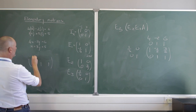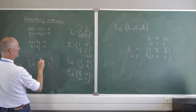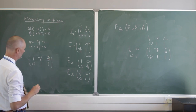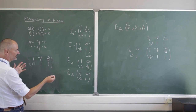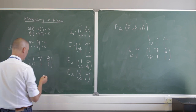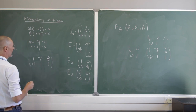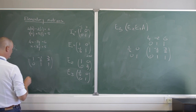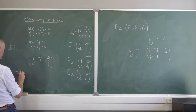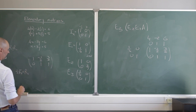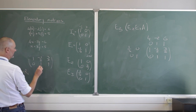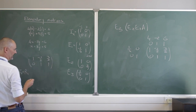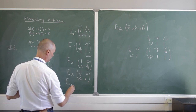We have [1, -1/2, 3/2; 0, 1, 1]. I could stop here with back substitution, but let's reach fully reduced row echelon form. To eliminate the -1/2 in row 1, I'll use: a half times row 2 plus row 1. A half times row 2 gives a half, and negative a half plus a half gives zero — exactly what I want. So E4 applied to the identity matrix gives [1, 1/2; 0, 1].